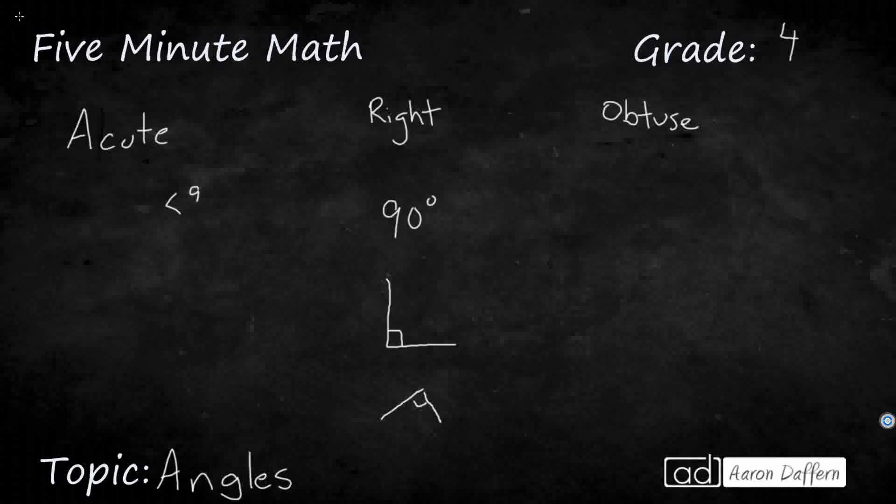So an acute angle is going to be any angle that is less than 90 degrees, but greater than zero. It has to at least be open, right? So it's going to be less than 90.